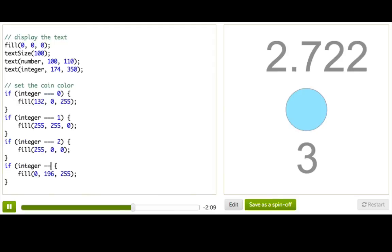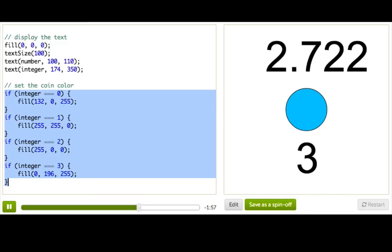So if integer is equal to 3, and that's because it's never possible for integer to equal 0 and then also 1, 2, or 3. Right? So these conditions are all mutually exclusive. Only one of these blocks will ever get run anyways.